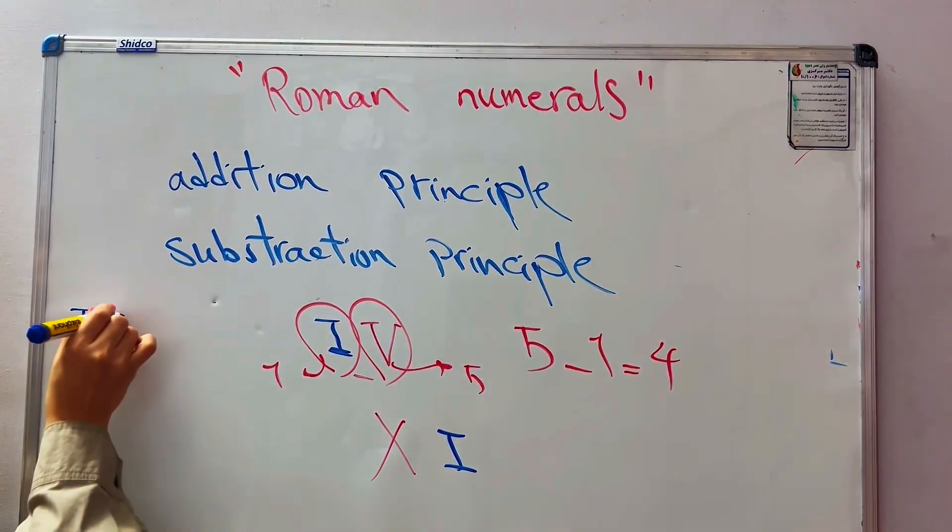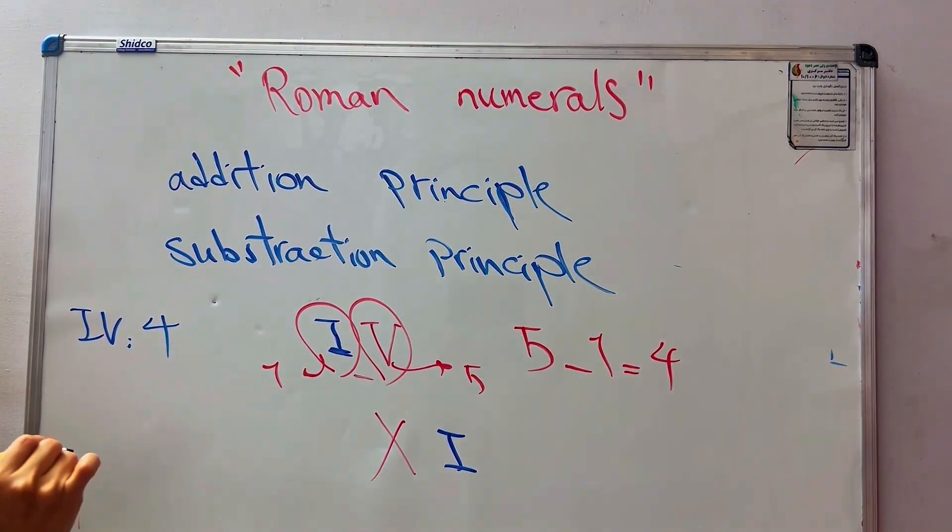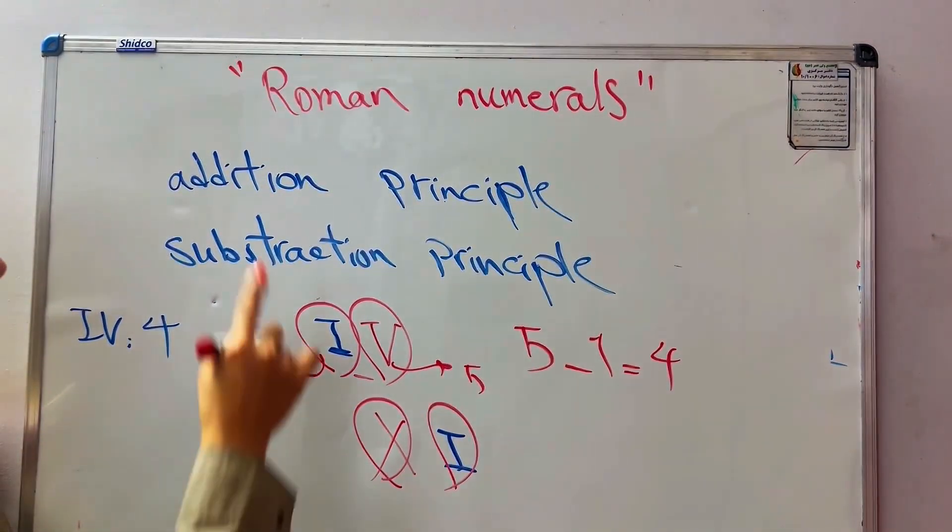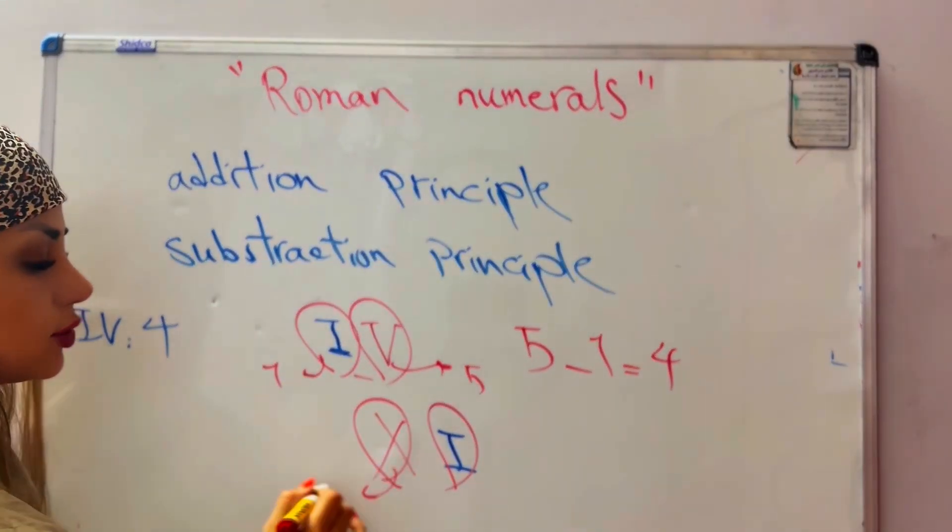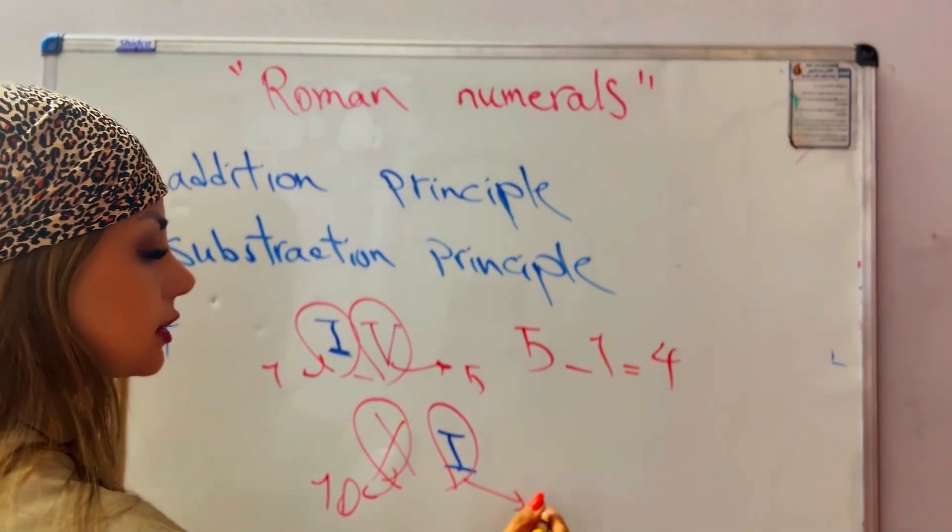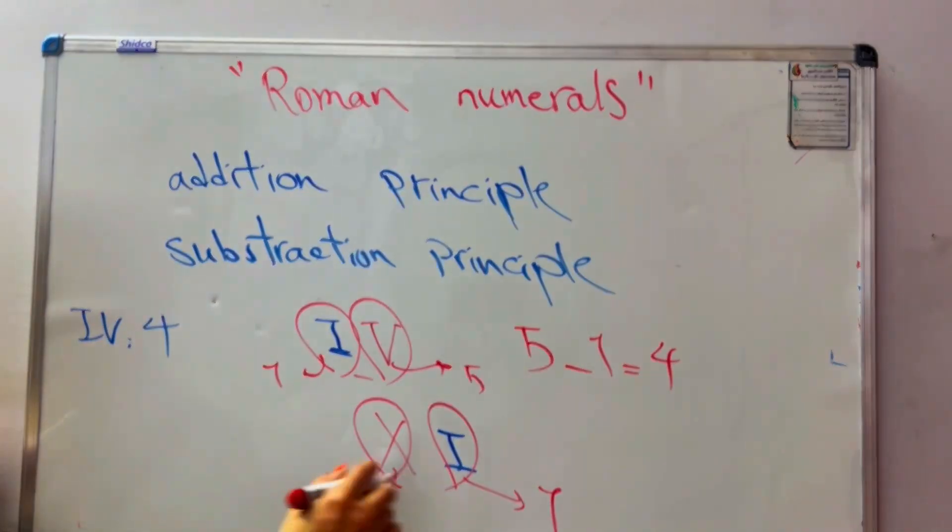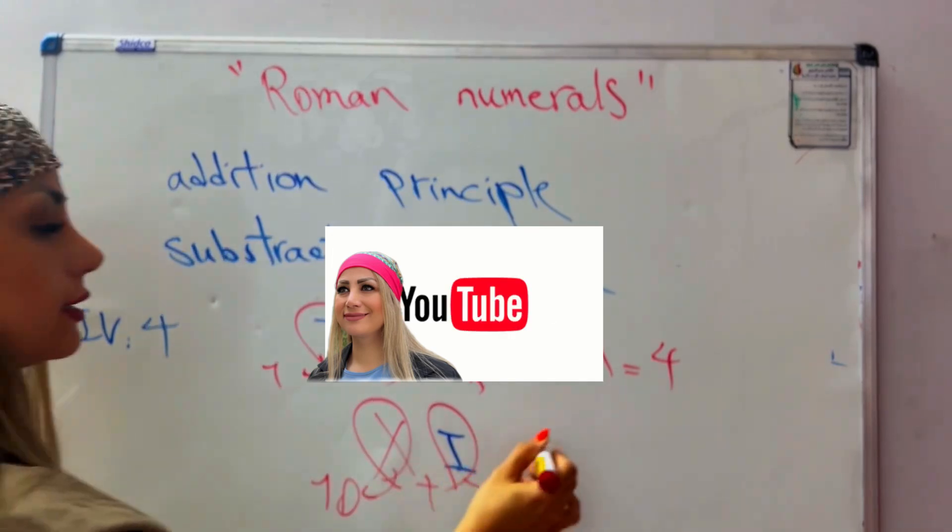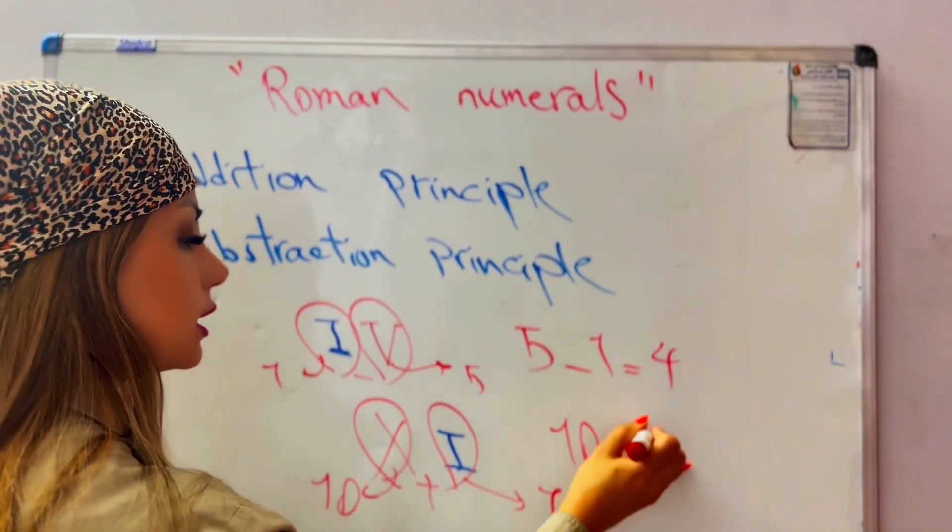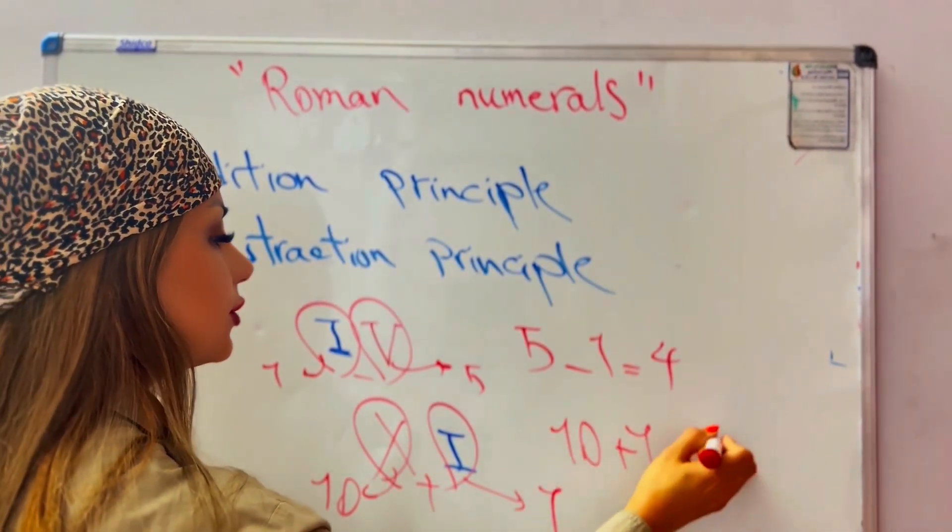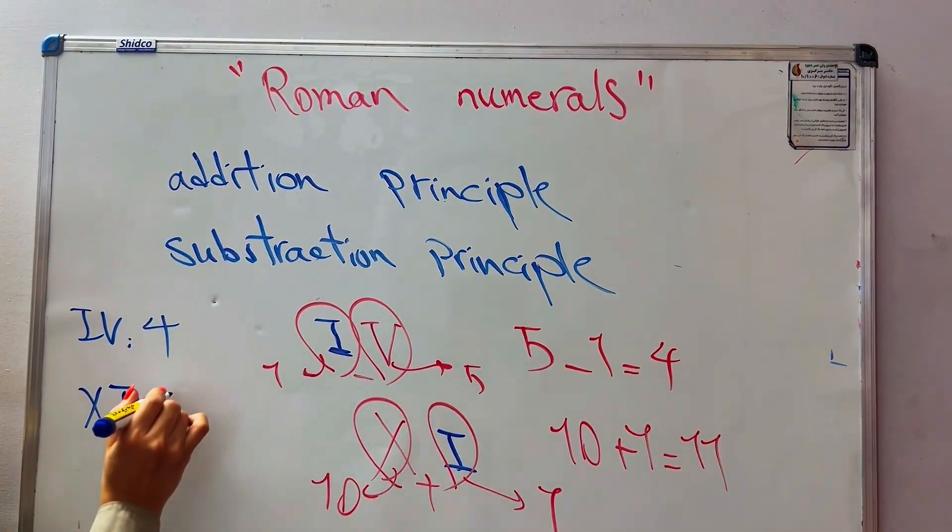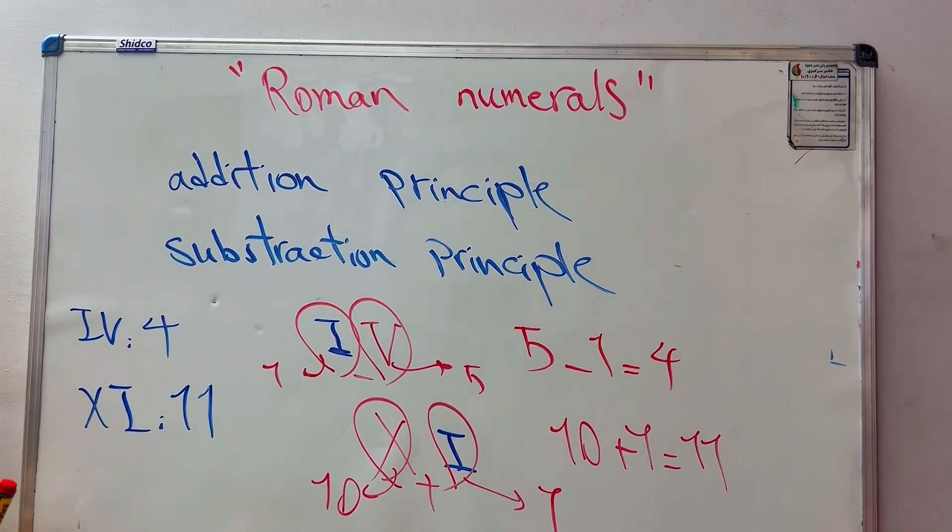As a result, this symbol shows four. In this case we have two sets of Roman numerals. This shows ten and this shows one. In this case we use the addition principle, and ten plus one equals eleven. As a result, this symbol shows eleven.